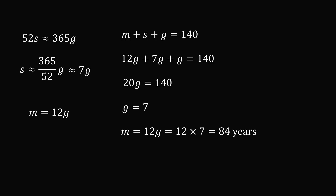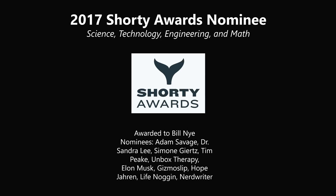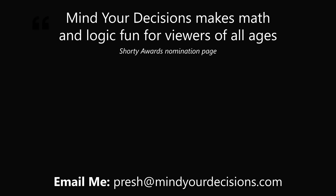Now m is my age. That equals 12g, so 12 times 7 equals 84. So my age is 84 years, and that is the answer. Thanks for making us one of the best communities on YouTube. See you next episode of Mind Your Decisions, where we solve the world's problems one video at a time.